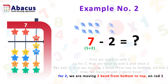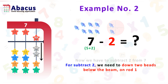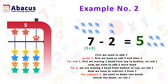We move 2 beads from the bottom up on rod 1, and here we got 7. Now we subtract 2 from 7. On the bottom of rod 1 we have 2 beads, so we can easily subtract — we move 2 beads down below the beam using the index finger on rod 1. Here we get the answer 5. To summarize: for 7, we added 5 at the top and then added 2 from the bottom; then to subtract 2 we moved 2 beads down at the bottom, and we got the answer. It's easy!